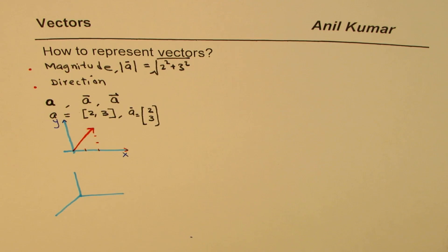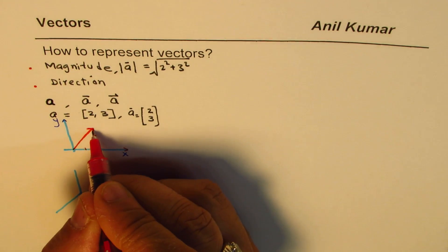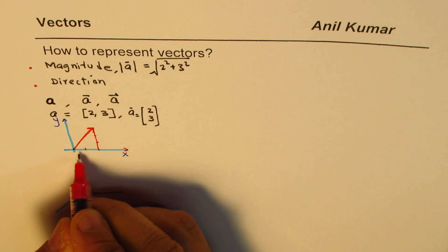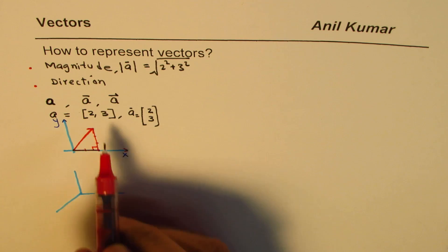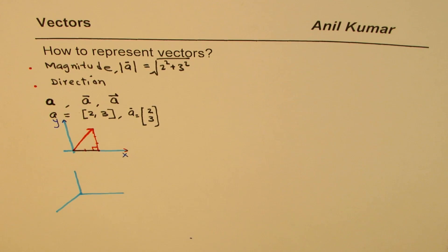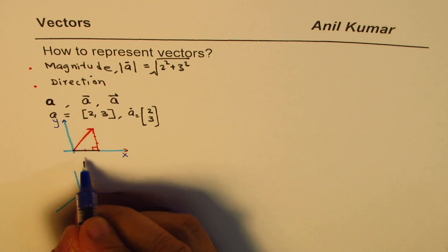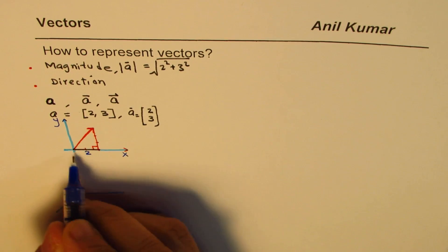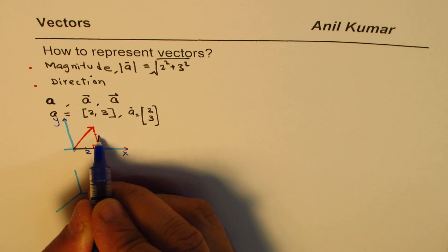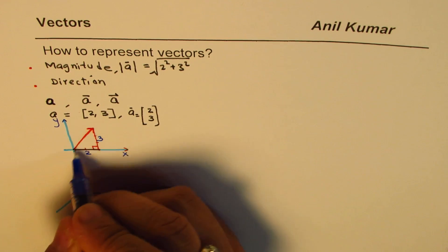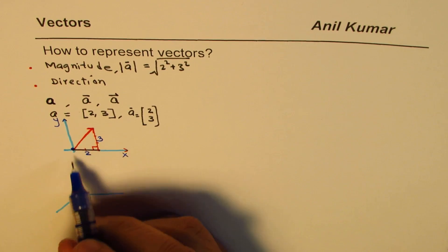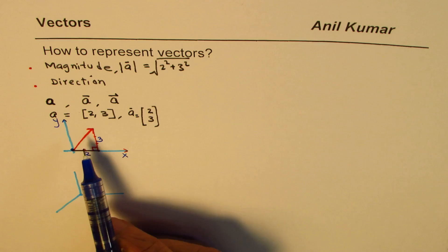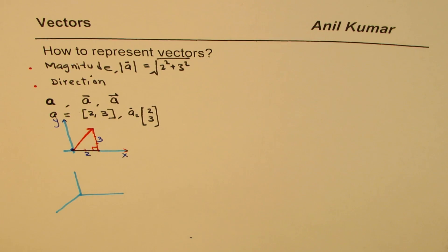Let me connect all these things. If I drop a line here and make a triangle, this will be a right triangle. So 2 is along the x-axis, 3 is along the y-axis, and the vector itself is the hypotenuse — that's the magnitude. The arrow has a tail and a head.